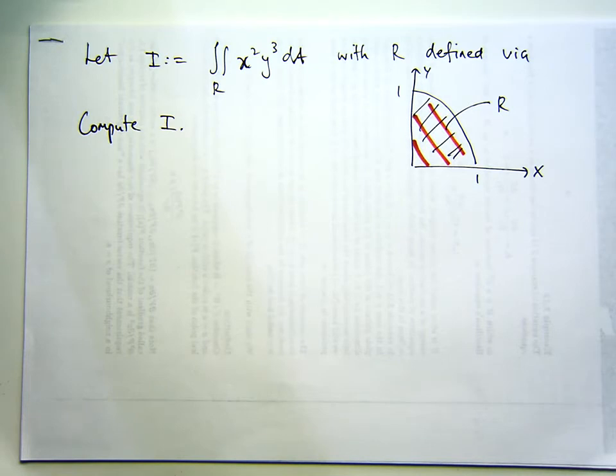But what we like to do is work smarter, not harder, so we're going to use polars for this one. Now sometimes polars are a good way of simplifying things, especially when you have things like disks or washers or circles that you're integrating over, or your integrand has something like x squared plus y squared in it.